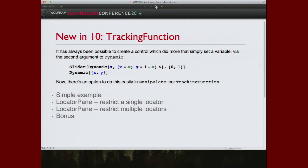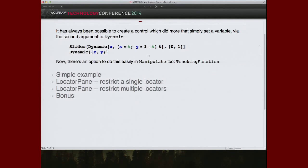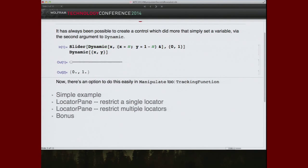So it's always been the case that you could take one of our control functions like slider, and rather than just having it adjust the value of a single variable, to give the dynamic a second argument in which you adjust that value and possibly do some other computation, some other side effect. So in this case, this is a slider that not only changes the value of x when you slide it, but it also changes the value of y.